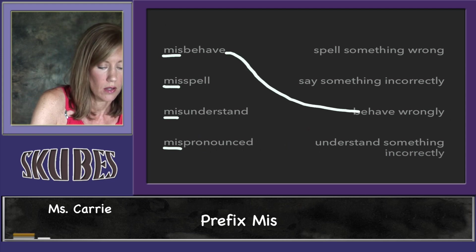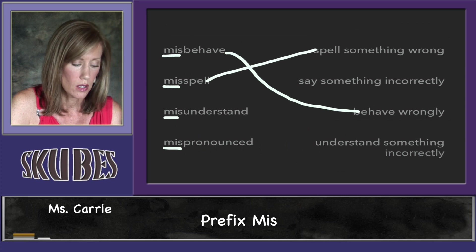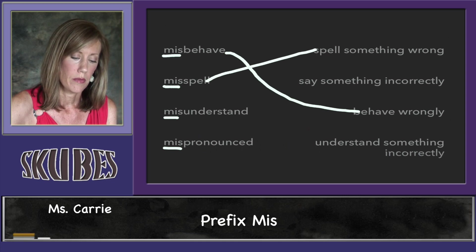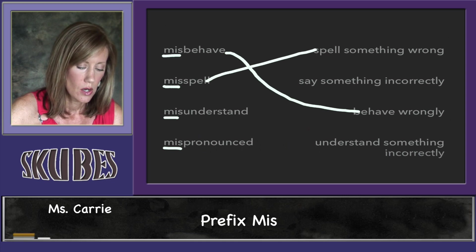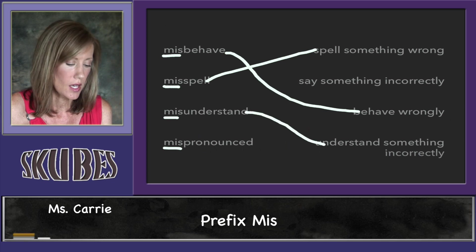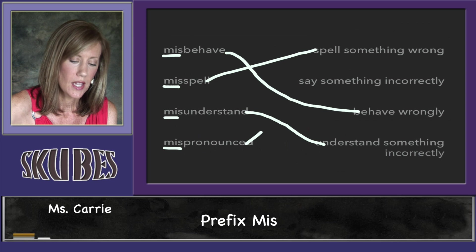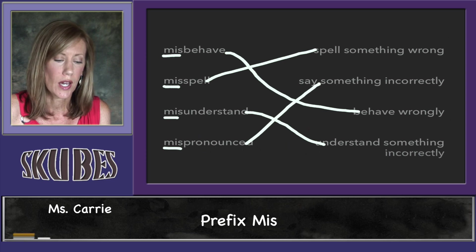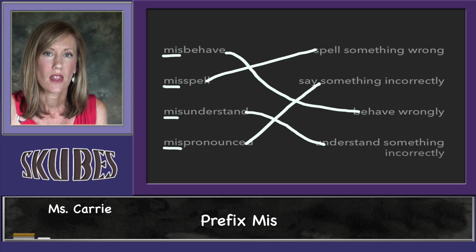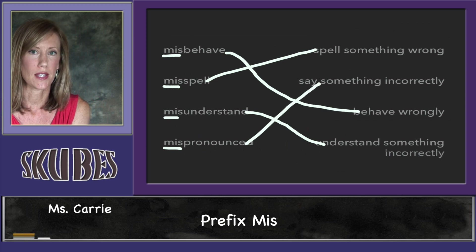'Misspell' would be to spell something wrong. 'Misunderstand' would mean to understand something incorrectly. And 'mispronounce' would be to say something incorrectly. That concludes our lesson on the prefix 'mis.'